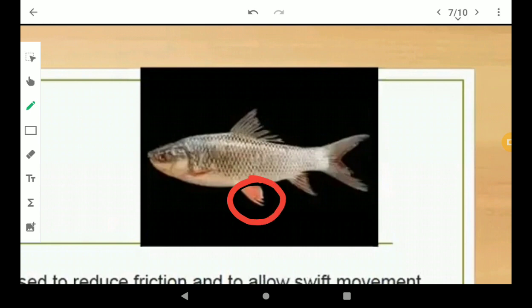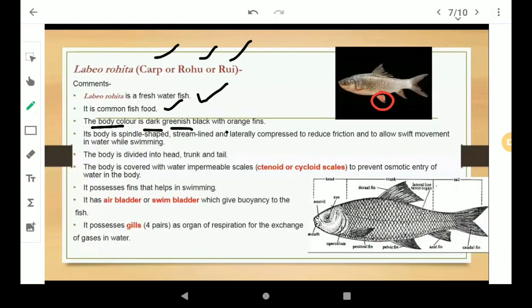Its body is spindle shaped and streamlined and laterally compressed to reduce friction and to allow swift movement in water while swimming. Spindle shaped means like a boat, streamlined and laterally compressed, meaning laterally flat.